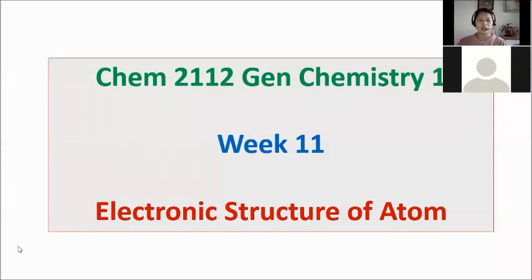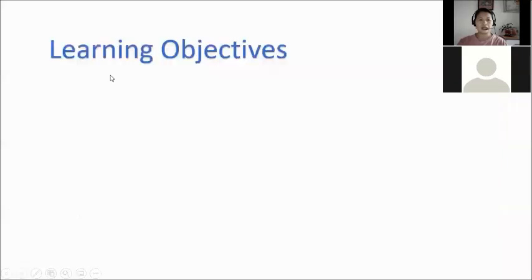For our learning objectives, at the end of this presentation, the students will be able to describe the quantum mechanical model of an atom, describe energy levels, relate energy levels to orbitals, and explain the significance of electrons in the outermost energy level of an atom.